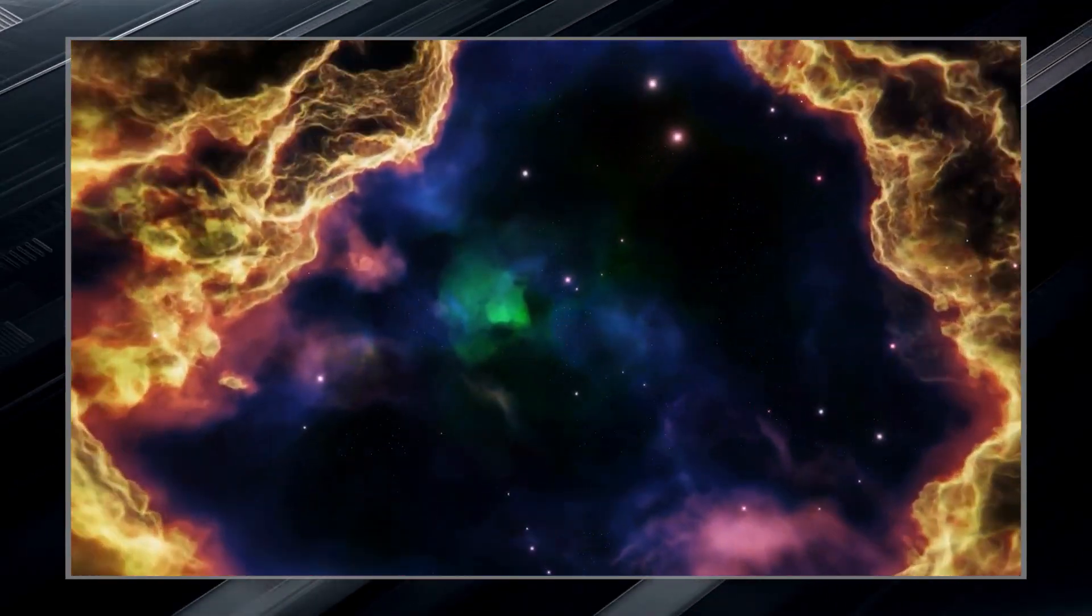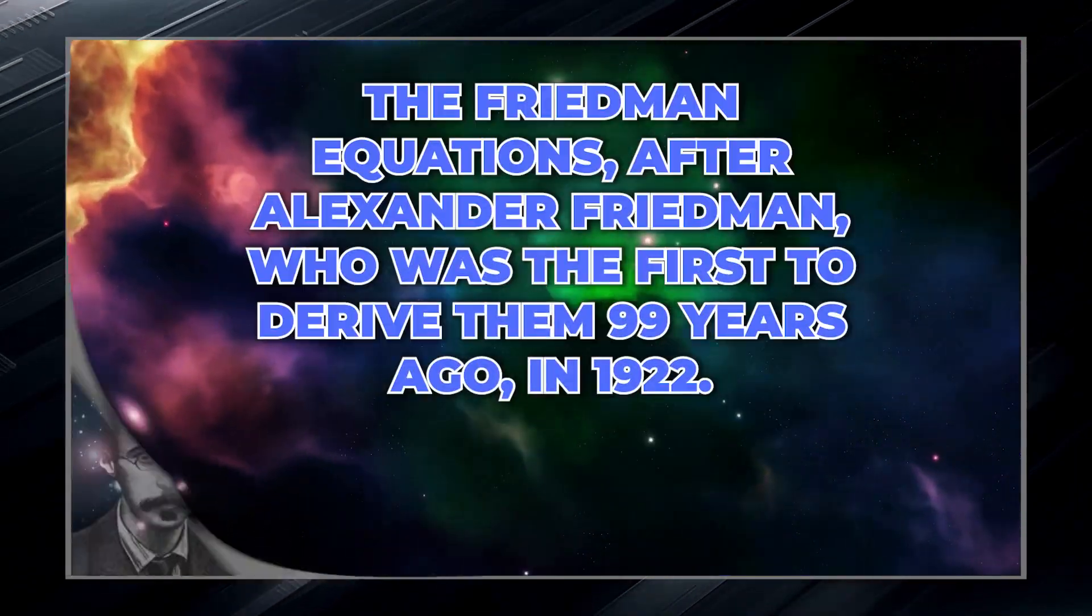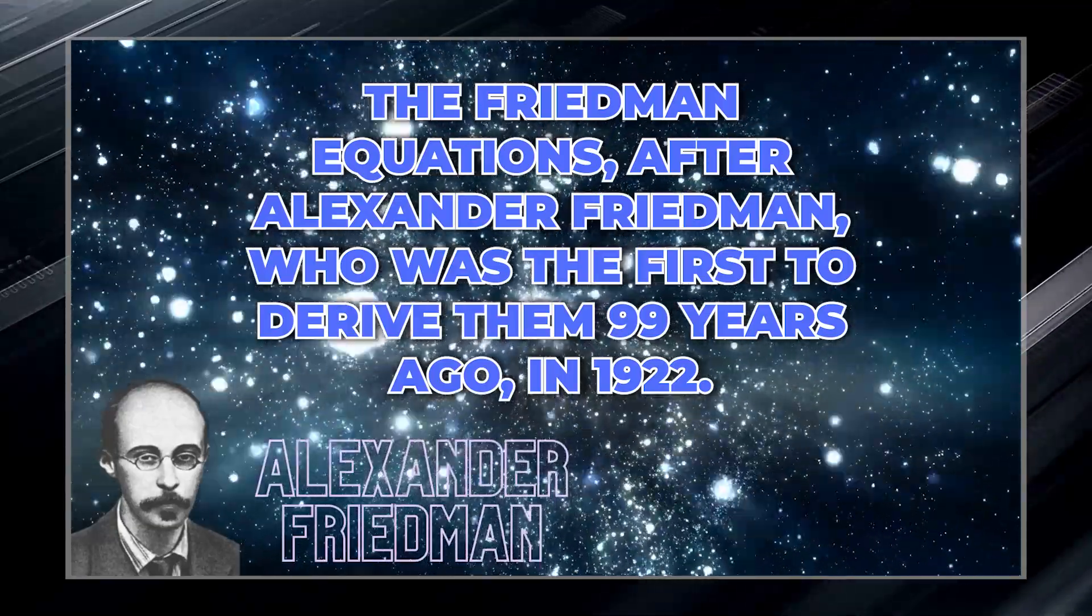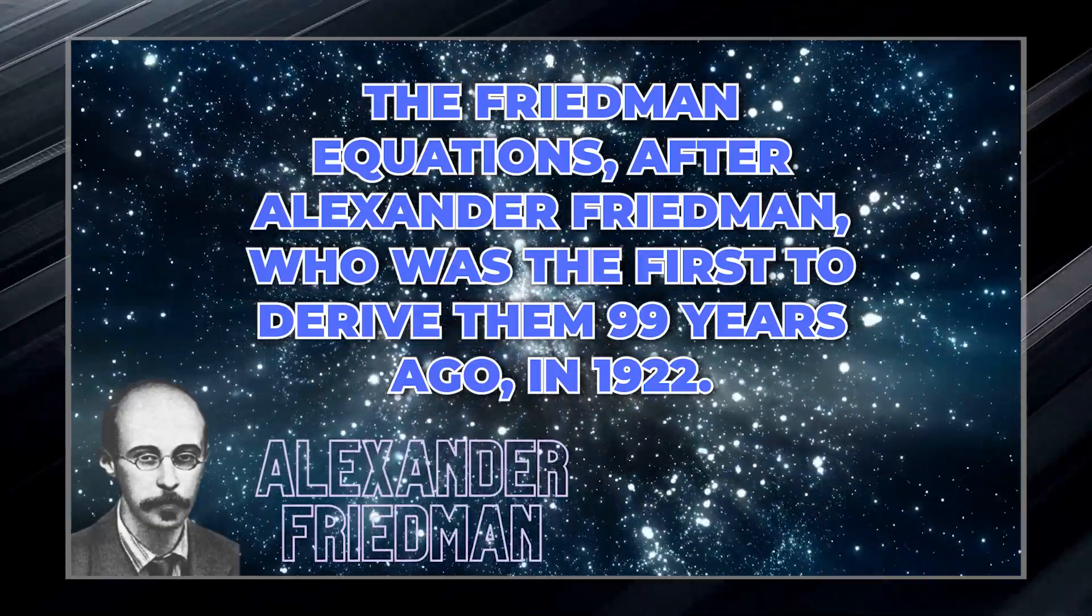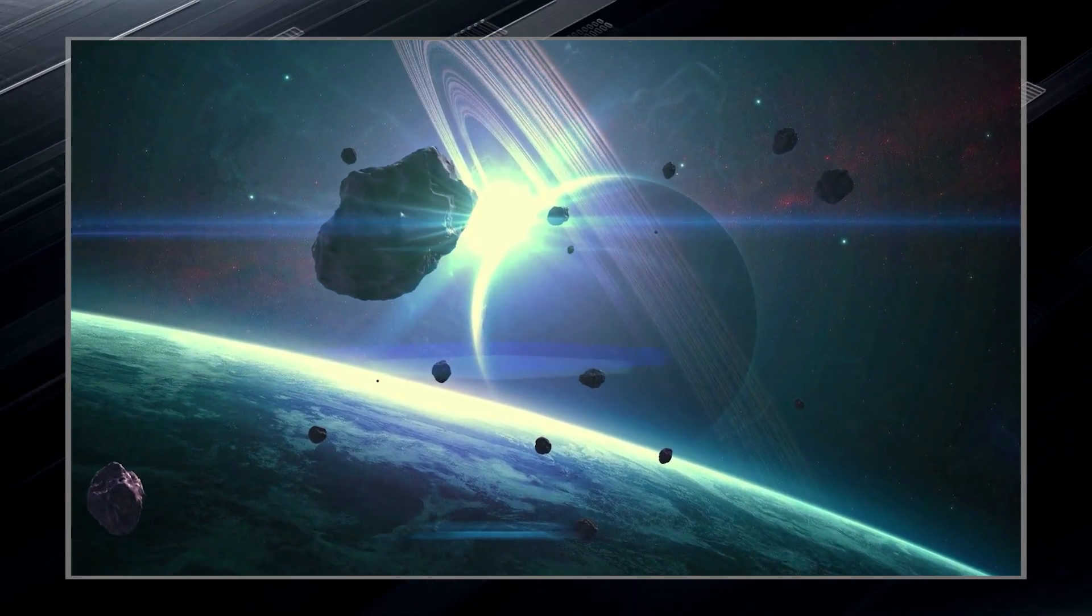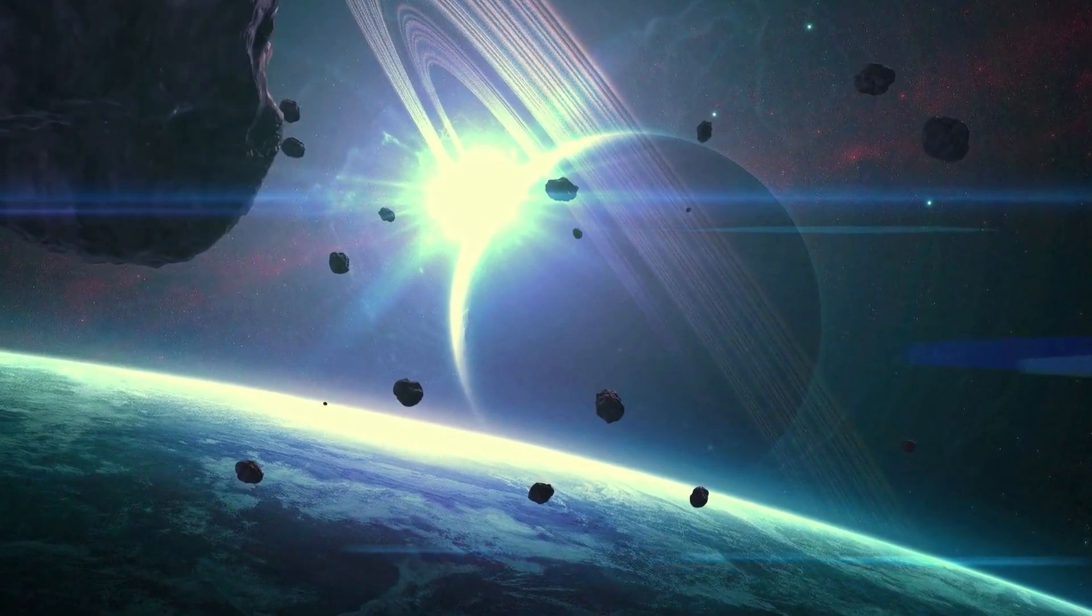The consequences of this resolution are known as the Friedmann equations, after Alexander Friedmann, who was the first to derive them 99 years ago in 1922. These equations tell us that a universe full of stuff must expand or contract in a particular way.